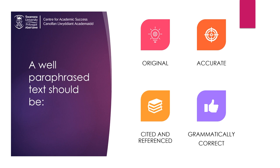It also needs to be accurate. This means that in changing the phrasing of the idea, you need to check to make sure that the idea itself was not changed. It's always a good idea after you've finished paraphrasing to go back to the original text and make sure that you haven't altered what the author or authors have said. Speaking of authors, it's important to cite and reference. Even though the phrasing of the idea is unique to you, the thought or idea still belongs to the original author. If you fail to give them credit for their idea, this can be considered a form of academic misconduct.